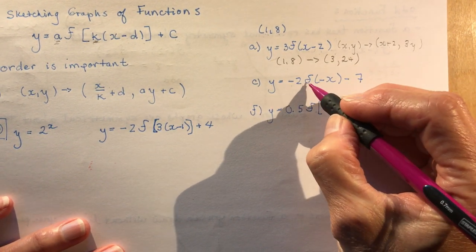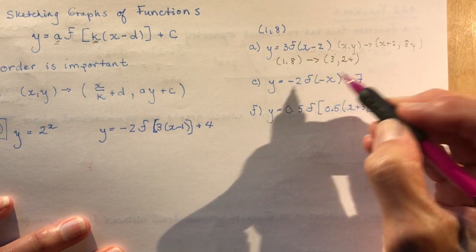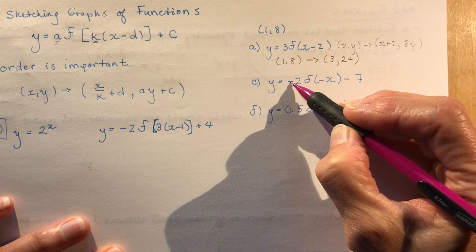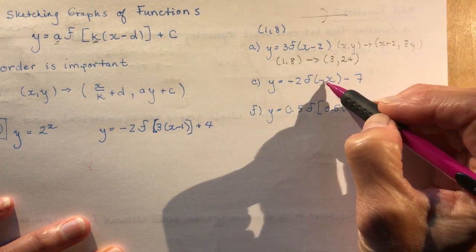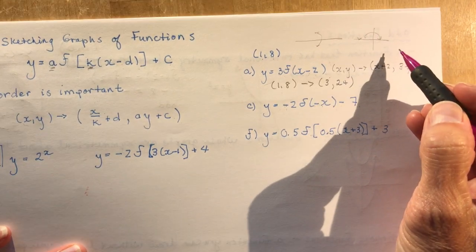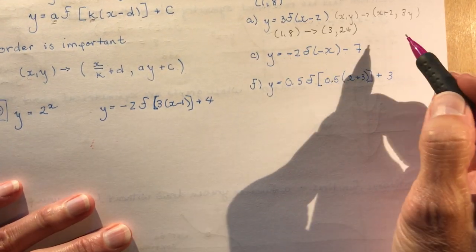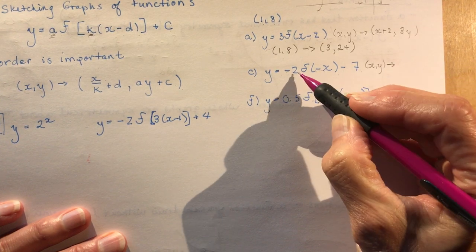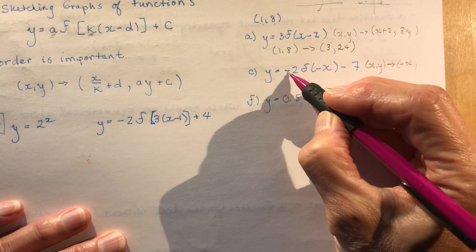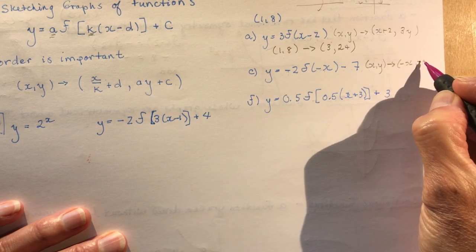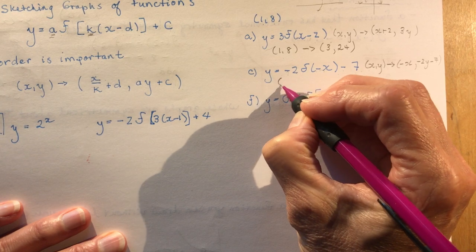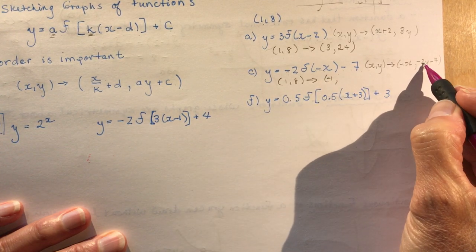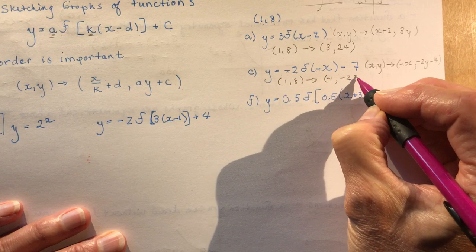So the next one, minus 2f(negative x) minus 7. Okay, so we have two reflections going on here, right? These negatives mean reflections. A reflection, if it's in front for the y, that means top to bottom, so about the x-axis. And for the x's, we're going this way, right? So that's about the y-axis. You know that we would take x and y and our transformation would be negative x and negative 2y minus 7. Y's are always very straightforward. Okay, so the point (1,8) is going to become negative 1. And the 8, I'm going to multiply it by negative 2. That's minus 16 minus 7 is minus 23. And there you go.